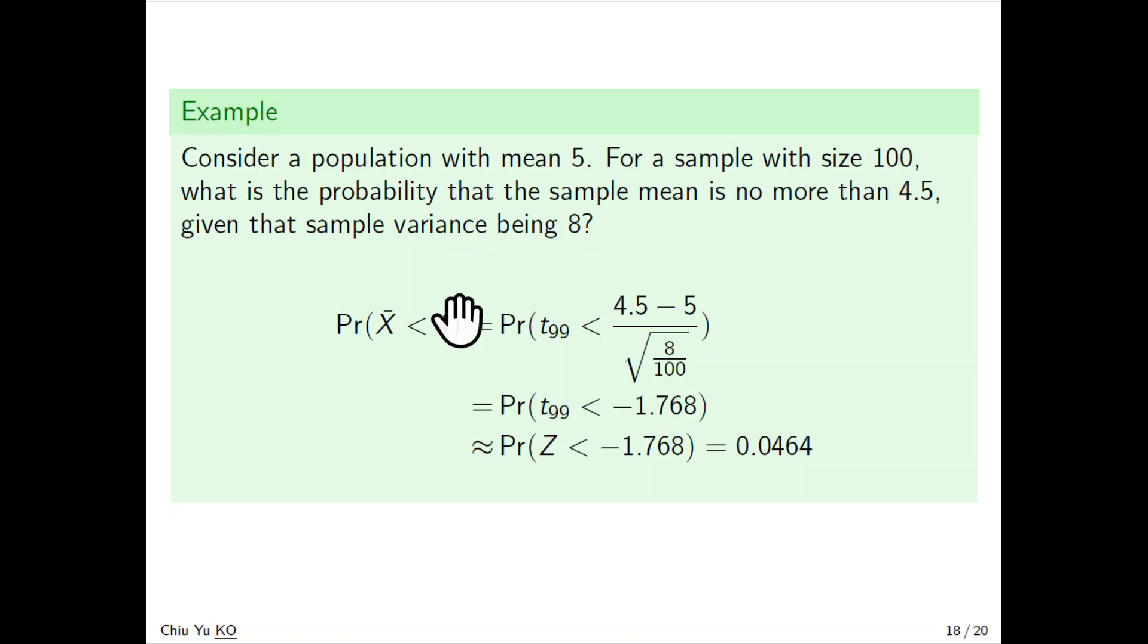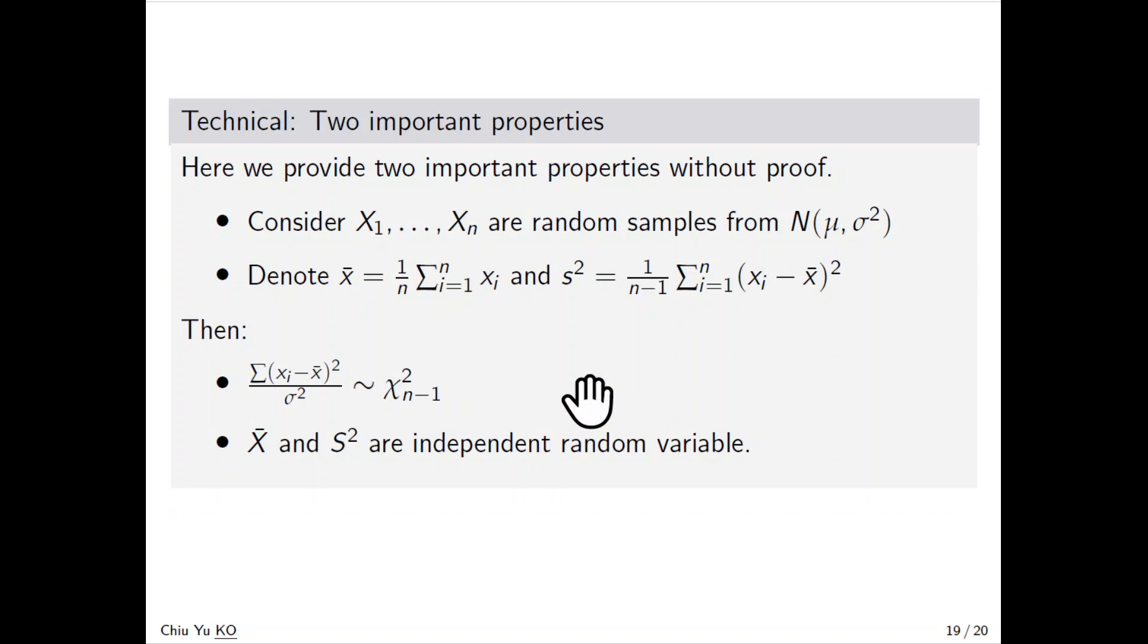P(X̄ < 4.5) equals P(t₉₉ < (4.5-5)/√(8/100)) which equals -1.768. From the t-table with 99 degrees of freedom, this gives probability 0.0464. Actually, when n is more than 50 or 60, t and z distributions are very similar. It's a very small probability.